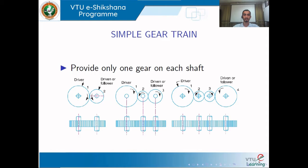In a simple gear train, the power is being transmitted from one shaft to another shaft and only one gear is used on a single shaft. Each shaft can have only one gear, not more than one. The gear which is driving — the first gear is called the driver and the second gear is called the driven or follower. The smaller of the two gears is usually called the pinion.